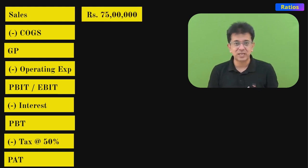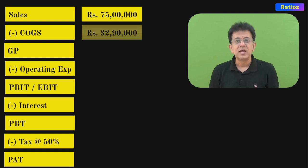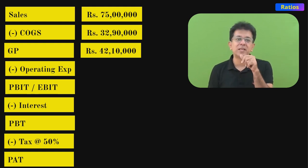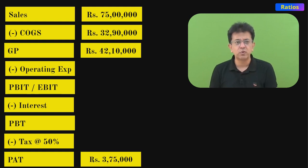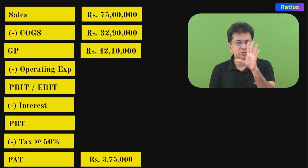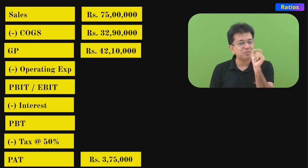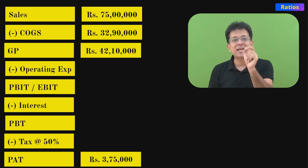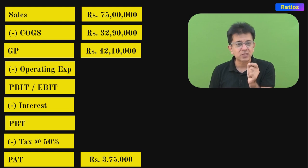Sales is 75 lakhs. Less cost of goods sold is given, so gross profit can be computed as a balancing figure: 42 lakh 10,000. Now operating expenses we want as a balancing figure, so let's start from the bottom. PAT is sales × 5% = 3,75,000. Tax rate is 50%, so if PBT is 100, taxes are 50 and PAT is also 50. Therefore PAT and taxes are equal — both are 3,75,000.